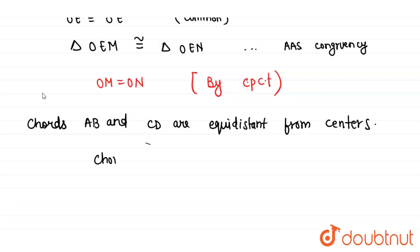So chord AB is equals to chord CD. This is our final answer.